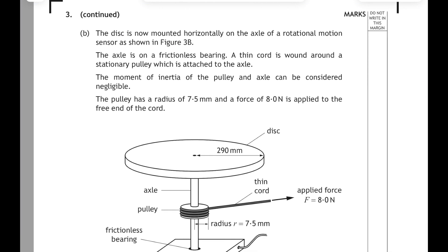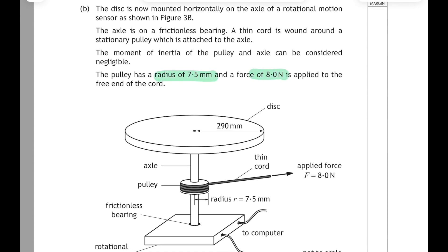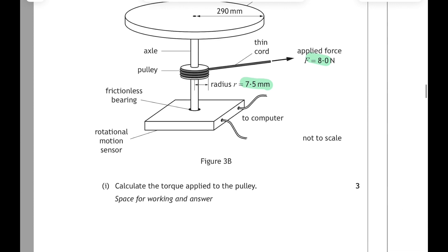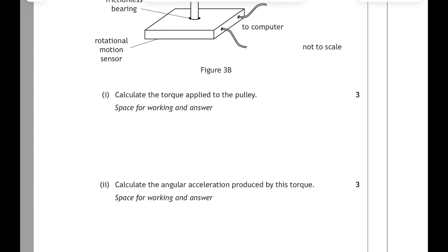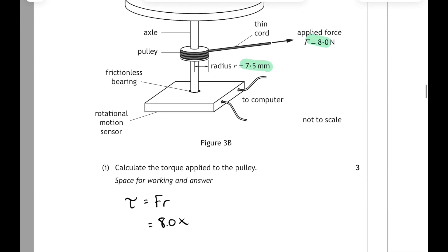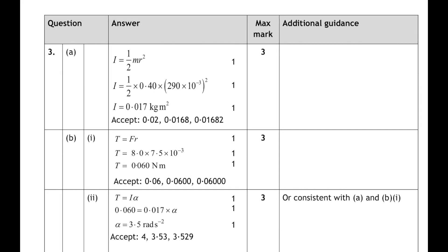The disc is now mounted horizontally on an axle on a frictionless bearing, and a thin cord is wound around a stationary pulley attached to the axle. The moment of inertia of the pulley and the axle are negligible. The pulley has a radius of 7.5mm and a force of 8N is applied to the free end of the cord. For part 1 we have to calculate the torque applied to the pulley — straight to the relationship sheet: τ = FR. The applied force was 8N and the radius of the pulley is 7.5×10⁻³ m, giving an answer of 0.06 N·m.